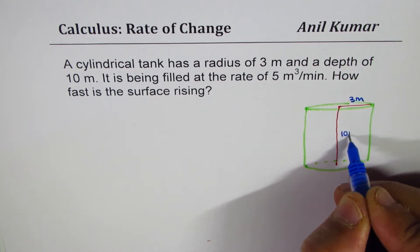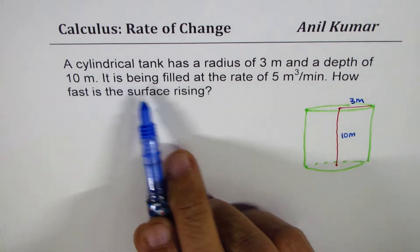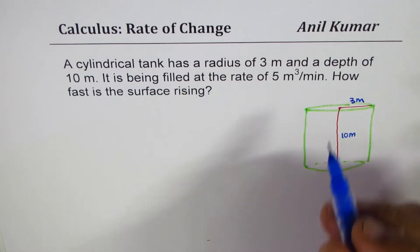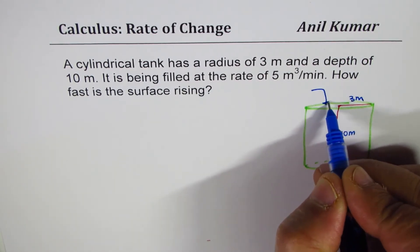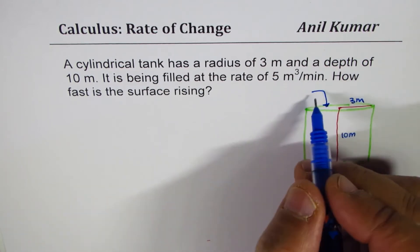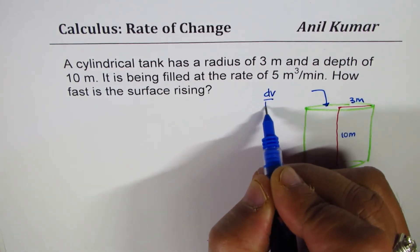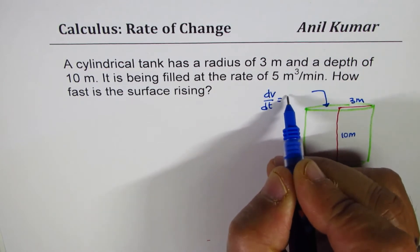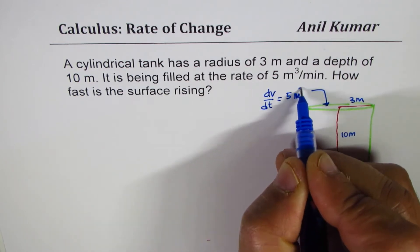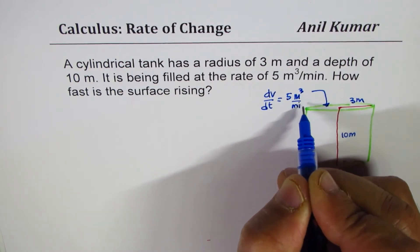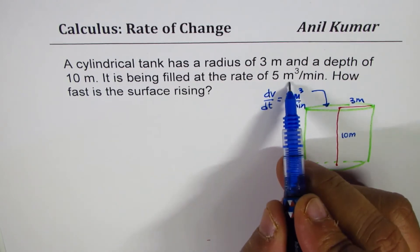It is being filled at the rate of 5 meter cube per minute. That means volume, right? So dV/dt is constant and it is 5 meter cube per minute. So if there is a confusion, look for units - they will tell you what we are working on. Meter cube is volume, minute is time.